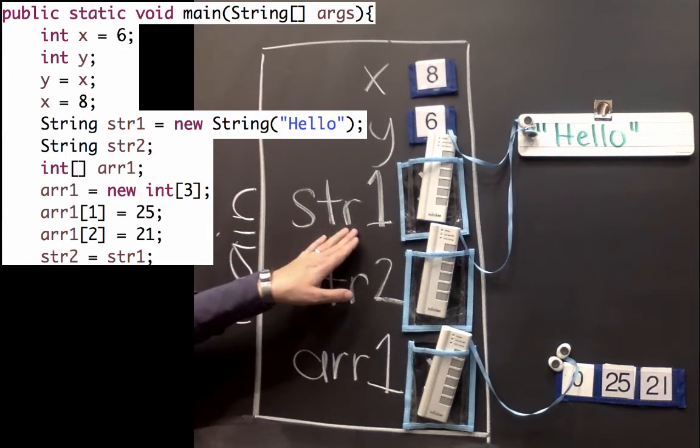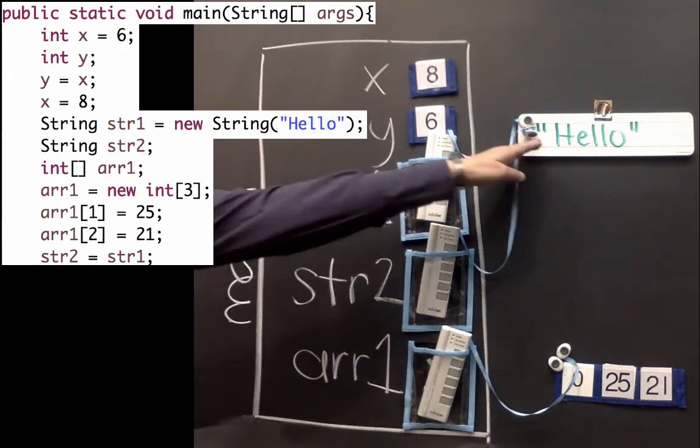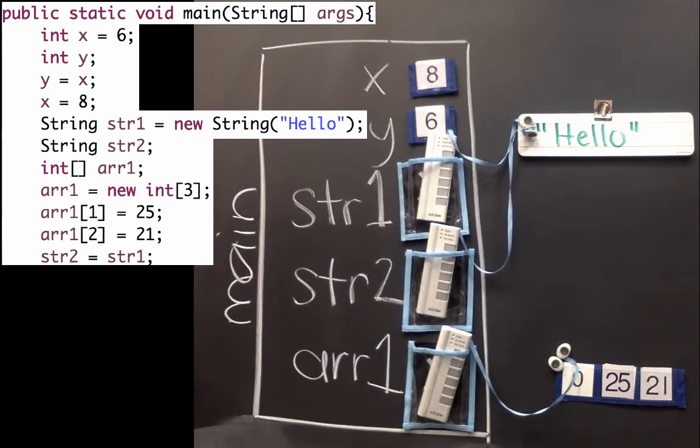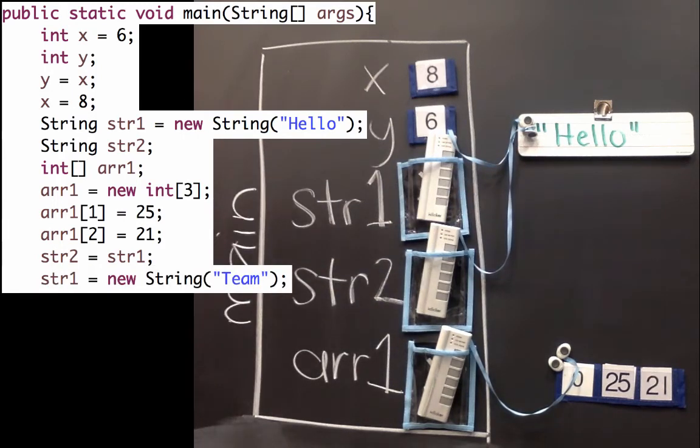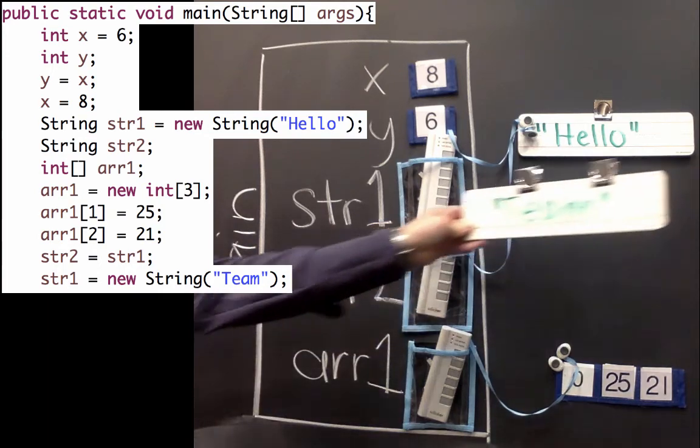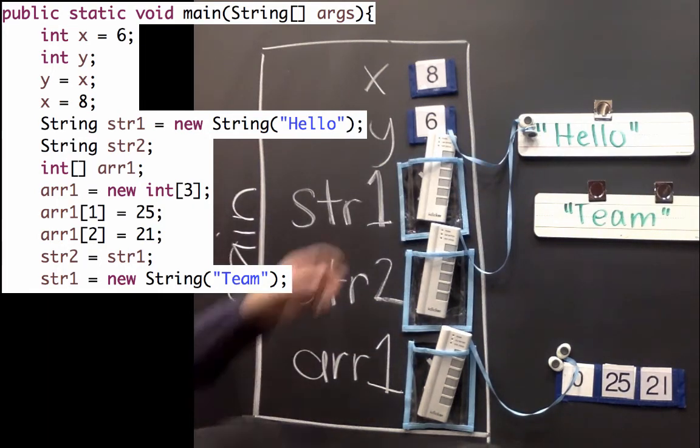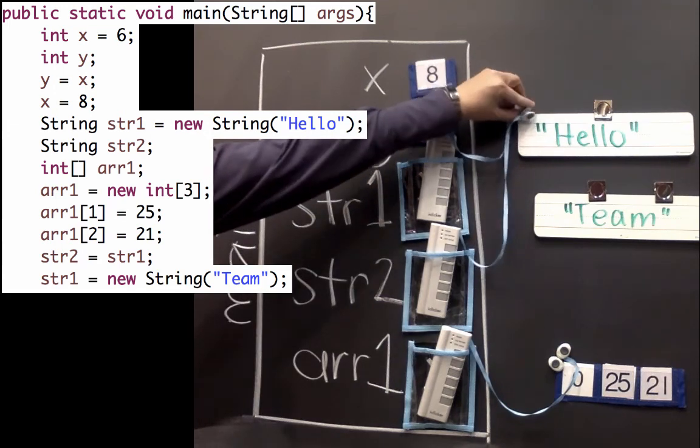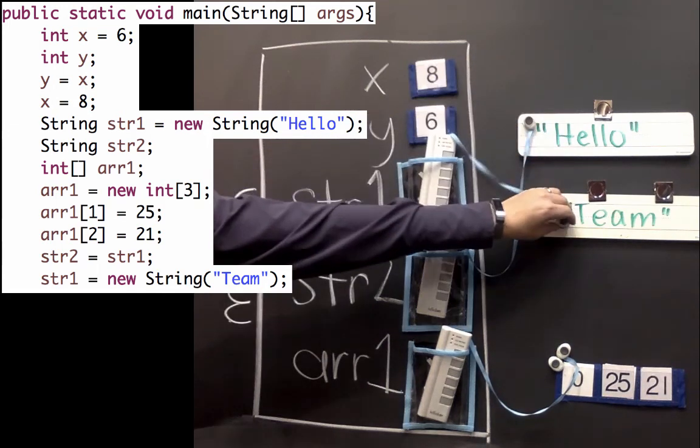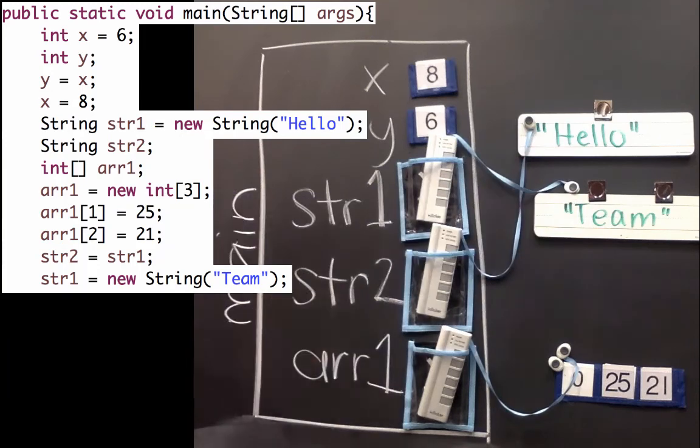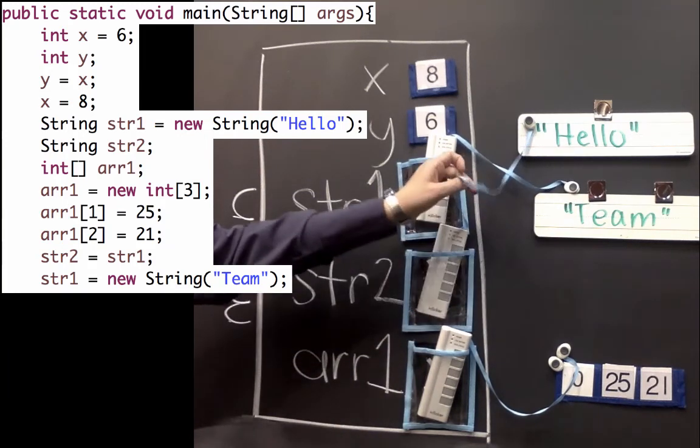And just because str1 and str2 currently point to the same thing, they don't have to stay that way. We could use another get statement or an assignment statement and change that. So we could say now that str1 gets the value of team. So that's a new string with the contents team. And what would happen is now str1 would reference that team. And it's important to note that that didn't change what str2 is referencing.